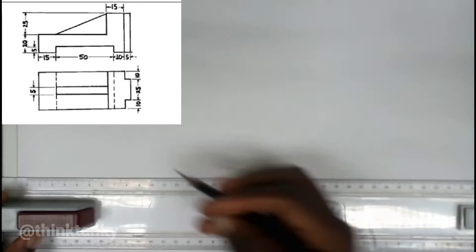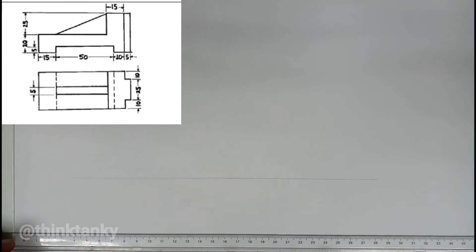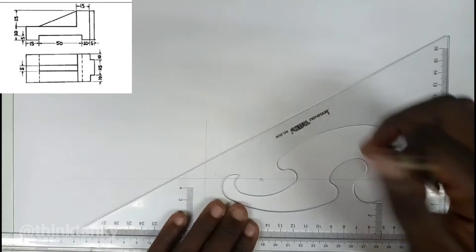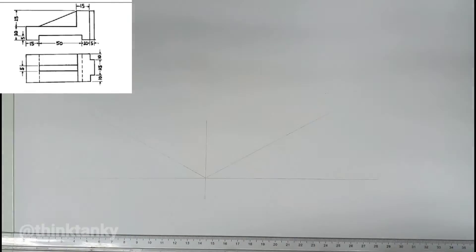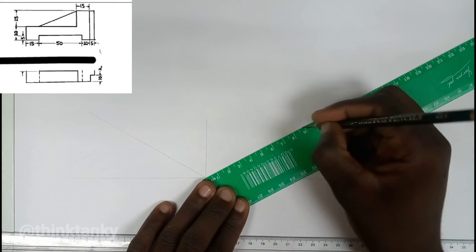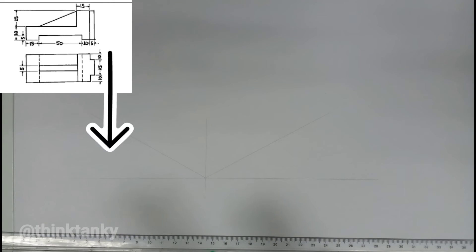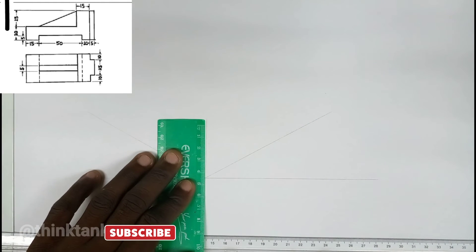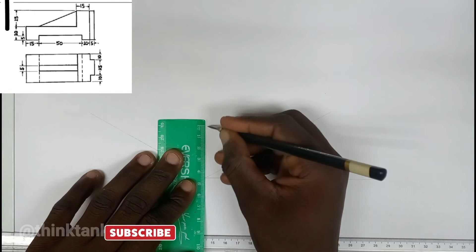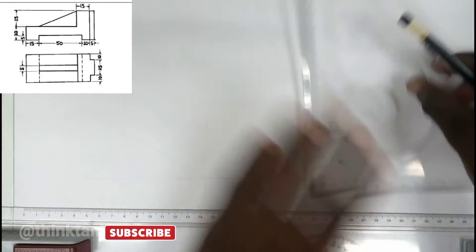As usual, I'm going to draw my construction line and draw an axonometric box. The length of my diagram is 15 plus 50 plus 10 plus 5, which equals 80mm — you can get this from the front view. From the plan, the width is 10 plus 10 plus 25, which equals 45mm. From the front view, the height is 20 plus 25, also 45mm. All measurements are in millimeters. Now I can construct my axonometric box.